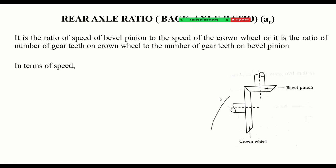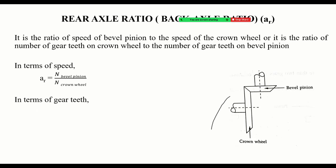The gear ratio is defined as the speed of the pinion divided by the speed of the wheel — that is, the driver gear speed divided by the driven gear speed. Multiplying these ratios together gives you the actual gear ratio.